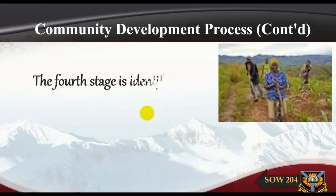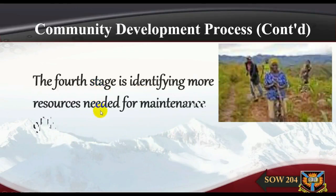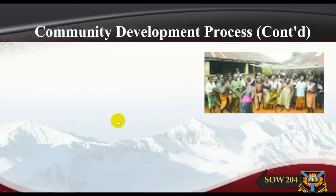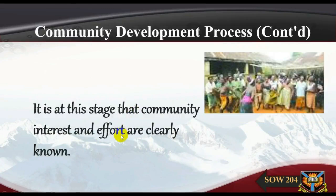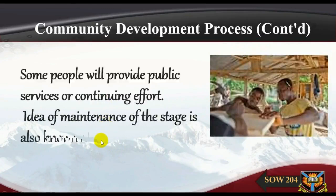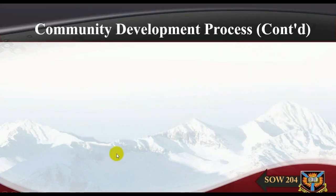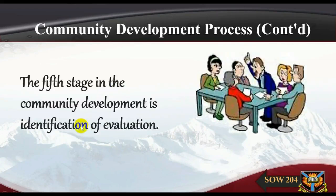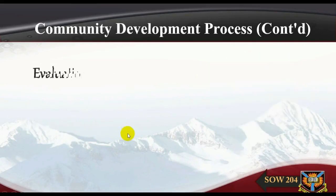The fourth stage involves identifying resources needed for maintenance of the previous stage. It is at this stage that community interest and efforts are clearly known. Some people will provide public services or continuing effort, and the idea of maintenance of the stage also becomes evident at this point.